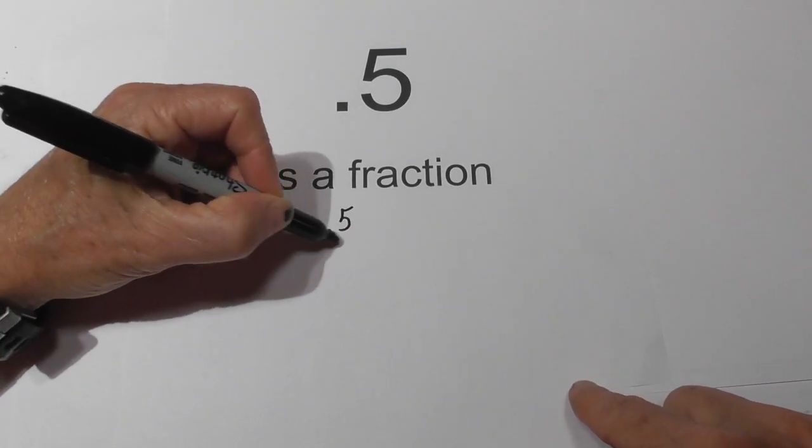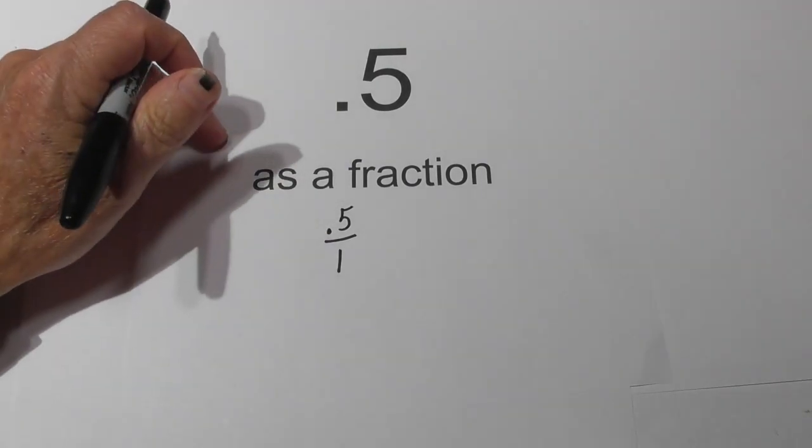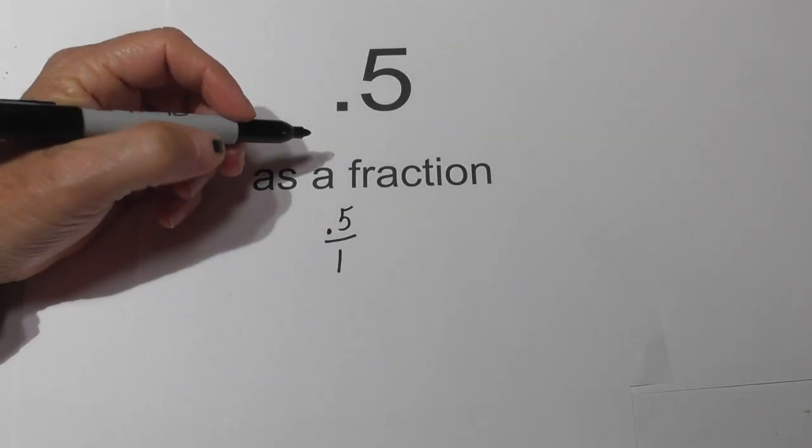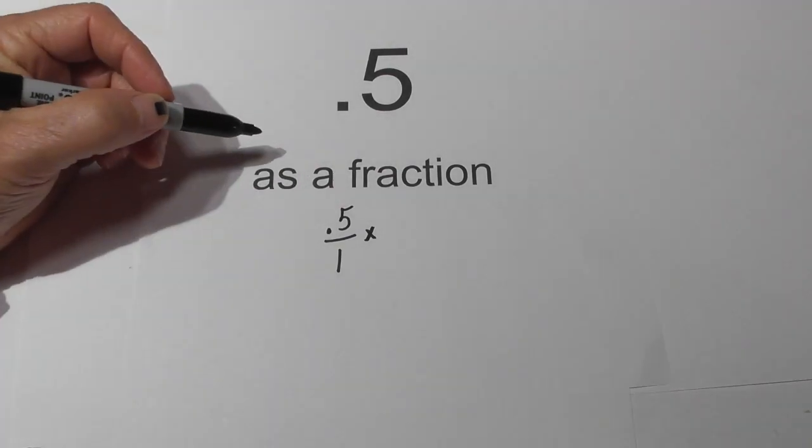Let's take 0.5 and make it a fraction. We'll place it over 1. Now we need to get rid of this decimal, so we need to multiply it by another fraction.